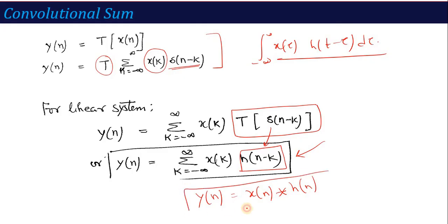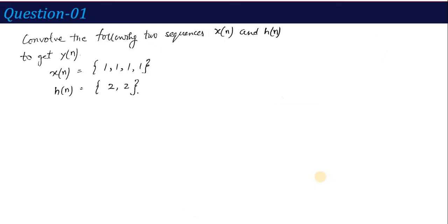This formula generates the output of the LTI or LSI system — the output is given as X(n) convolution h(n). Now this is the formula. To understand it, let's take a straightforward problem: convolve the following two sequences X(n) and h(n) to get Y(n). The sequence X(n) is {1, 1, 1, 1} and the sequence h(n) is {2, 2}.